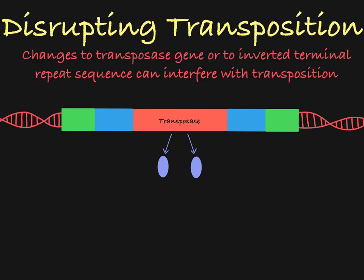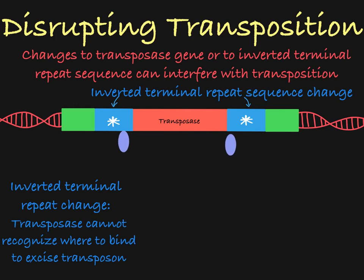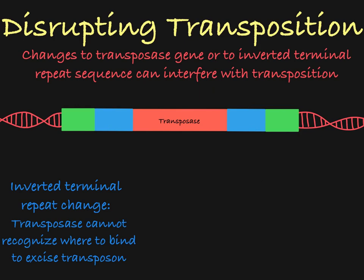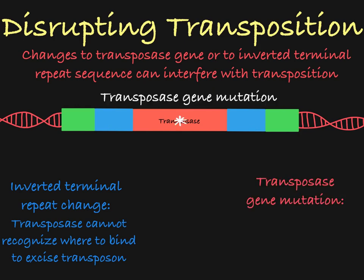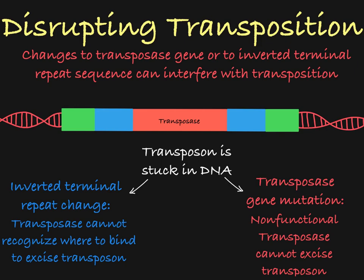Now, if the sequence in the transposase gene, or in the inverted terminal repeats, changes, the process of transposition may be disrupted. If the primary DNA sequence of the inverted repeat has been changed or mutated, transposase cannot recognize the ends of the transposon and does not perform the required double-stranded DNA cut. If the gene encoding the transposase is mutated, the encoded transposase protein might be non-functional and unable to either bind to or cut DNA. In either of these cases, the transposon is stuck because it cannot be excised from the DNA.